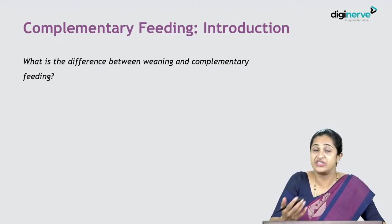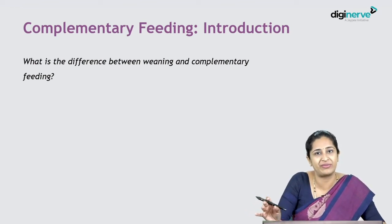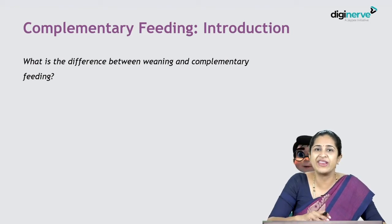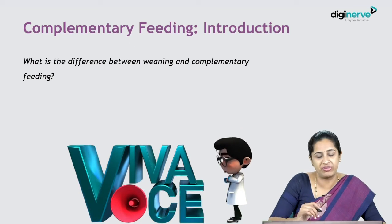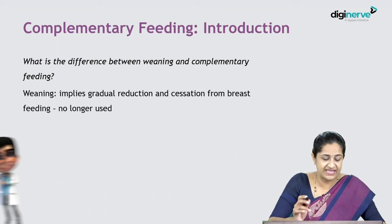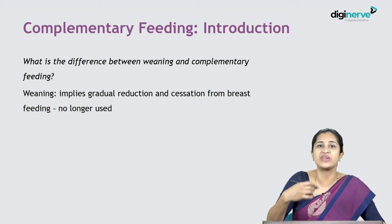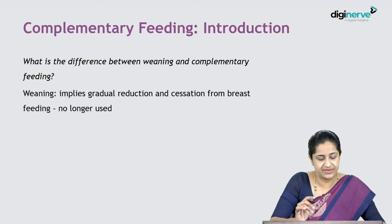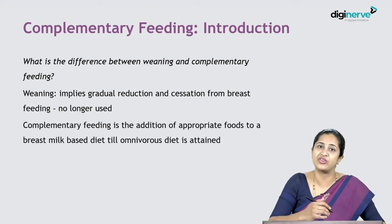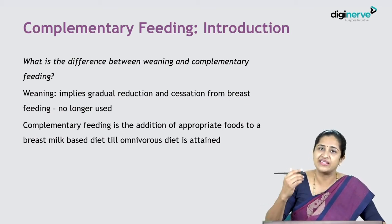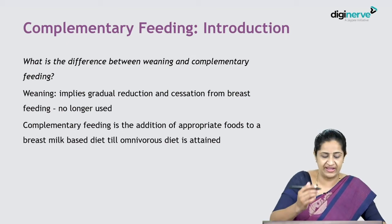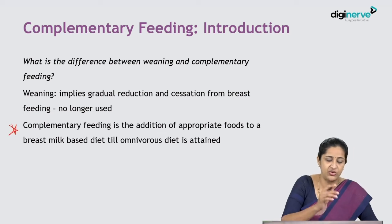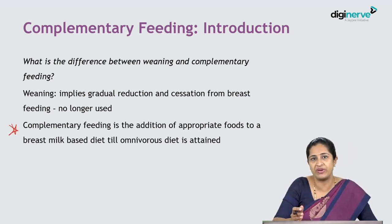Earlier books used the term 'weaning,' but this term has been replaced with complementary feeding. Weaning essentially implies gradual reduction and cessation from breastfeeding so that you can start solid feeds — hence it's no longer used. Complementary feeding, on the other hand, implies breastfeeding is sustained and the nutrition given by breastfeeding is complemented by adding appropriate foods until you reach a complete omnivorous diet.